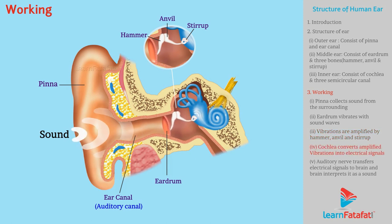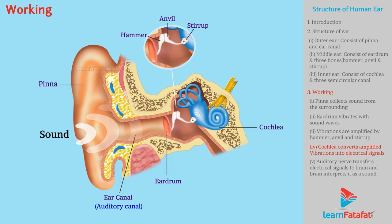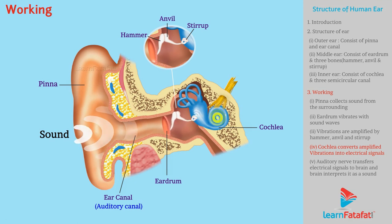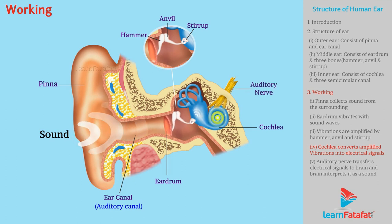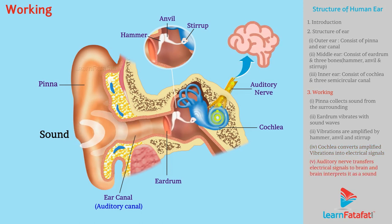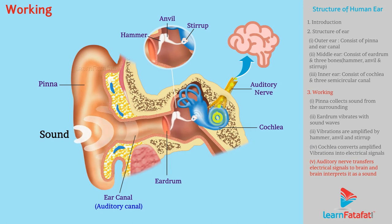These amplified signals are passed through the cochlea of the inner ear. The cochlea converts the amplified pressure variations of the wave into electric signals. The auditory nerve joins the cochlea and brain, transferring electric signals to the brain, which interprets them as sound.